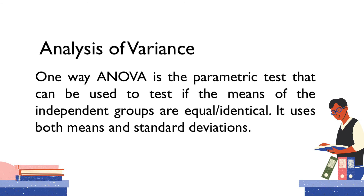Analysis of variance, or ANOVA, is another tool useful to test hypotheses and is very common in research. One-way ANOVA is the parametric test used to test if the means of independent groups are equal or identical. It uses both means and standard deviations. The difference between ANOVA and t-test is the number of groups being compared in the independent variable: for t-test, we only have two independent groups, while for ANOVA, there need to be three independent groups or more.